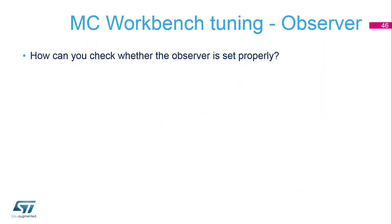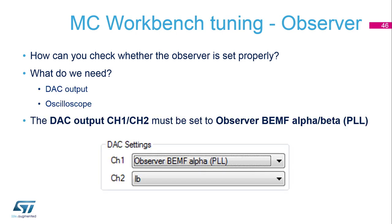To check whether the observer is set properly, we again need the DAC output and the oscilloscope. Set DAC output channels 1 and 2 to the observer back EMF alpha from the PLL and the second one as back EMF beta.